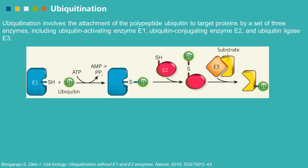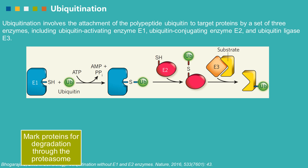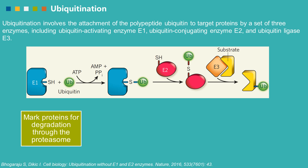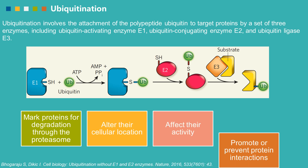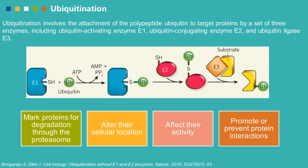E3 facilitates the transfer of ubiquitin from E2 to the substrate protein. Ubiquitination can mark proteins for degradation via the proteasome, alter their cellular location, affect their activity, and promote or prevent protein interactions.